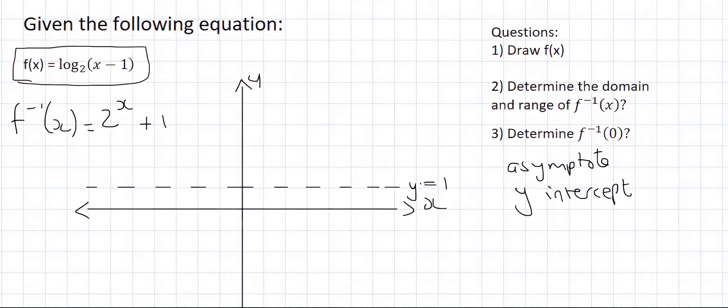Then we said that we should try to find a y-intercept, so we do that by making x 0, so we have f of minus 1 of 0. Remember, we're busy with the inverse now, and so 2 to the power of 0, so that's a plus 1. That's going to be 2 to the power of 0 plus 1 is going to give us 2. And so, the y-intercept is at 2.